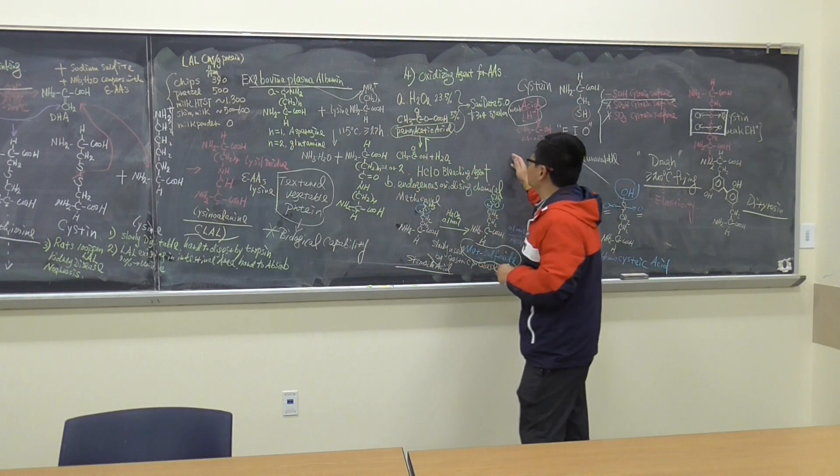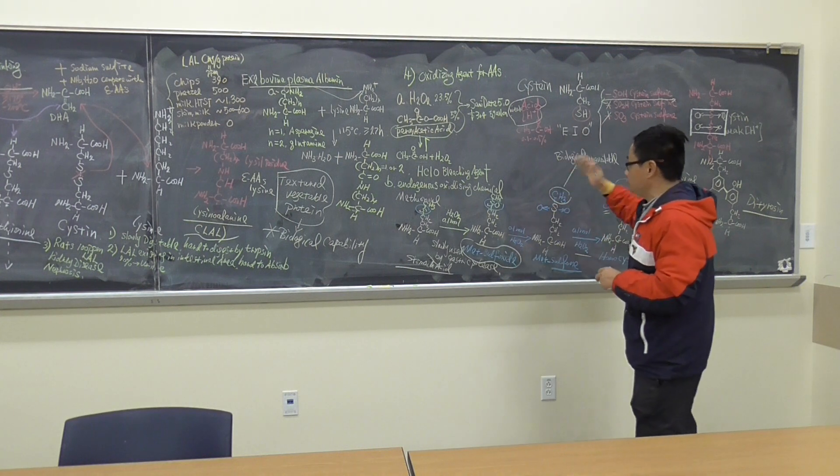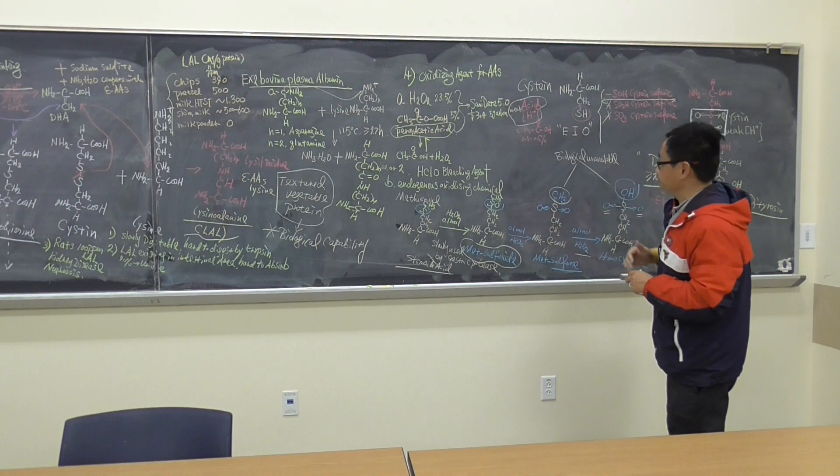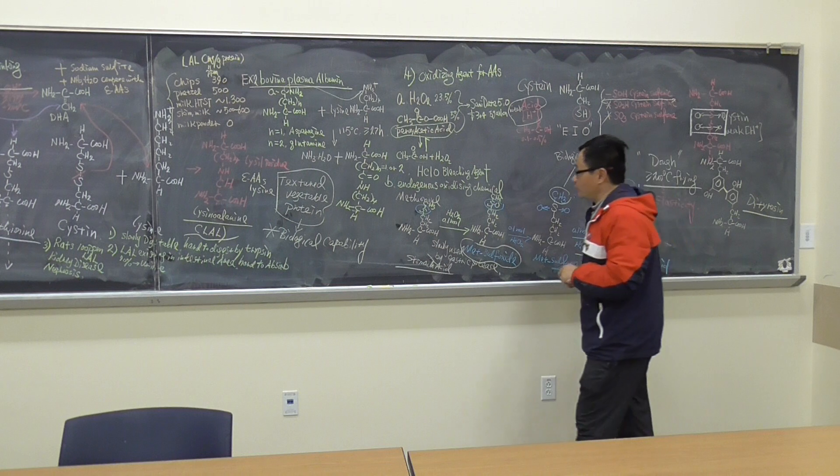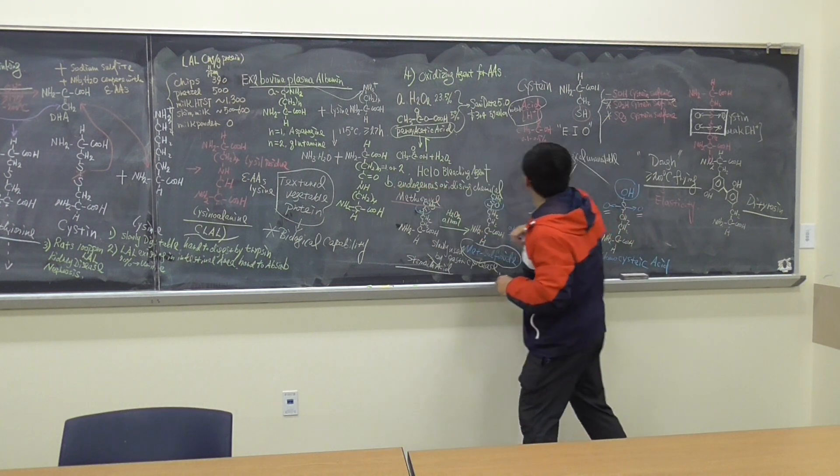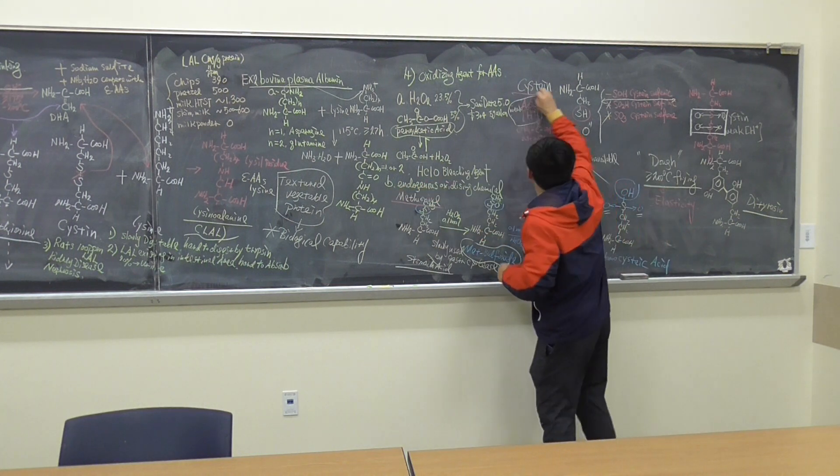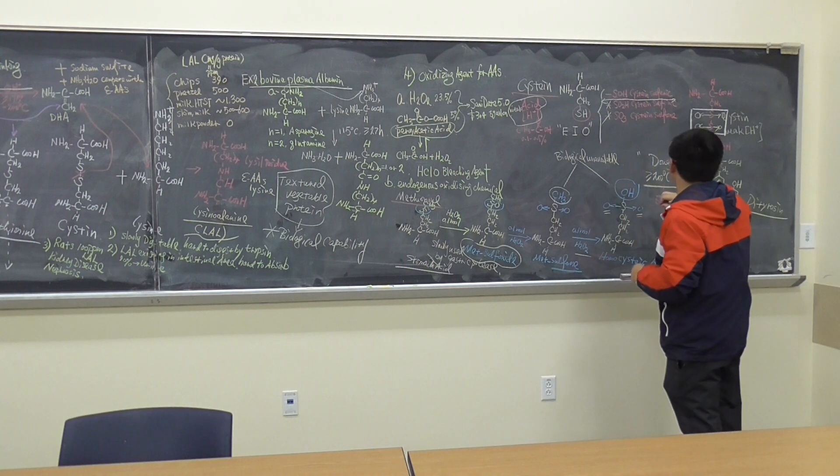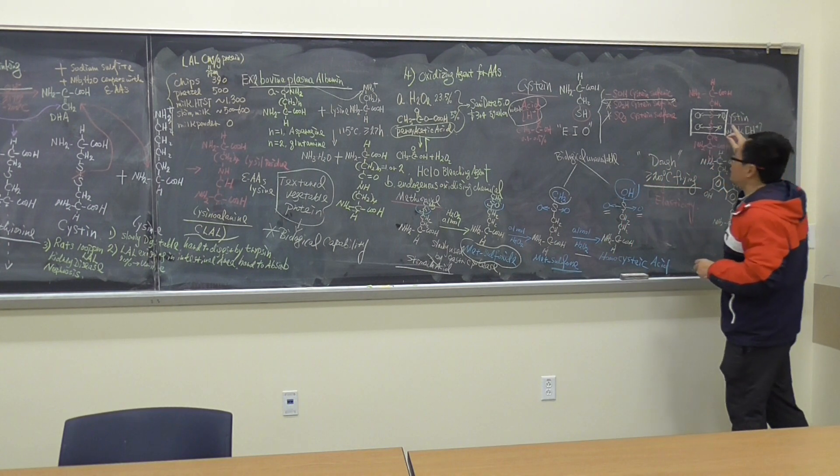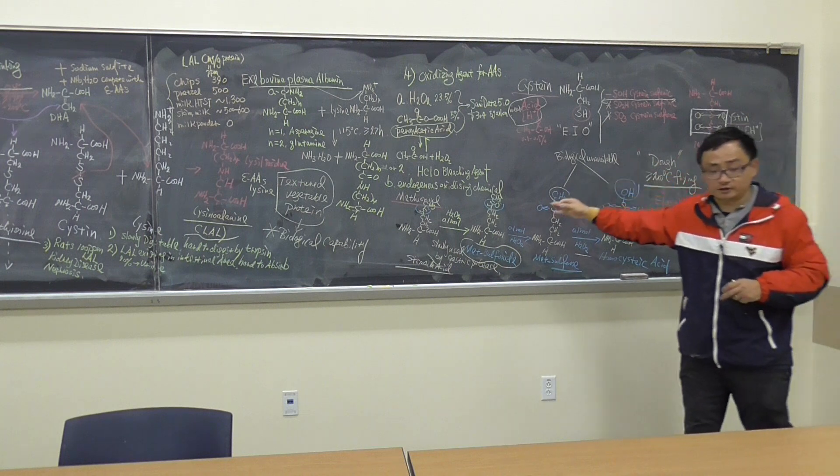Then, we talk about these oxidizing agents because they are widely used. When is oxidizing? Typically, what we find is methionine, is cystine, and also cysteine. This is cysteine. Because all these have a sulfide group.